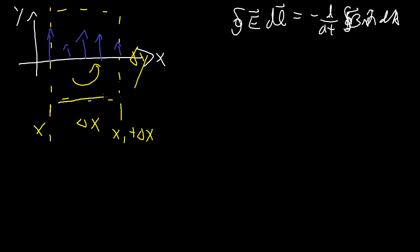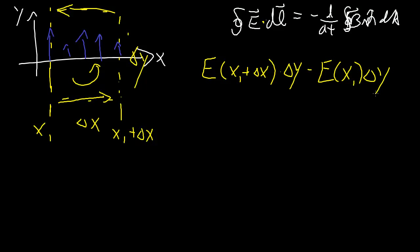As we integrate around the two horizontal sections, we're not going to get anything because of the dot product - the field is perpendicular to those two sides. On these two sides then, we have positive E(x₁ + Δx) times Δy, because they're in the same direction. On the other side they're in a different direction, so we have a minus. As Δx gets small, these differences can be approximated by the partial derivative.